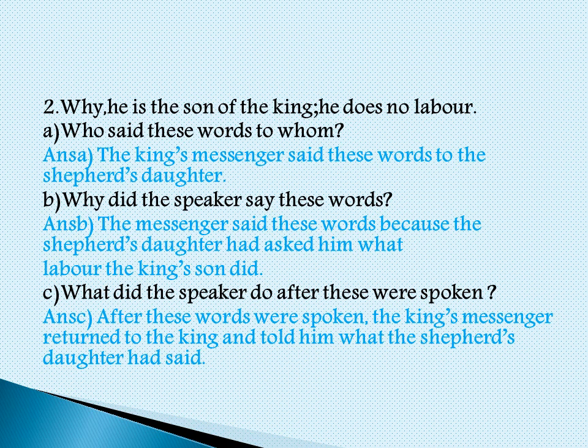Let us see the second extract. The messenger said these words to the shepherd's daughter. Question B: Why did the speaker say these words? The answer is, the messenger said these words because the shepherd's daughter had asked what labour the king's son did. Part C: What did the speaker do after these words were spoken? After these words were spoken, the king's messenger returned to the king and told him what the shepherd's daughter had said.